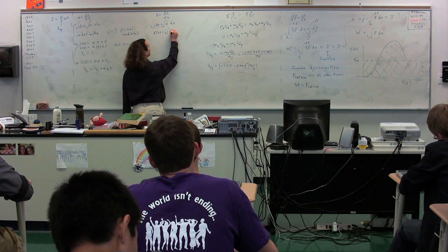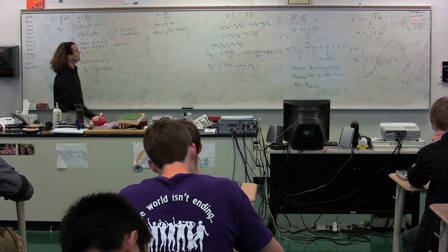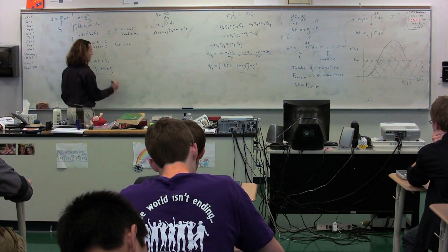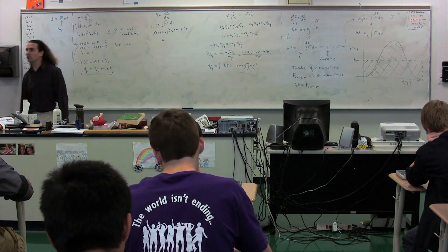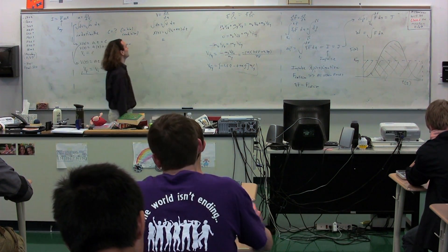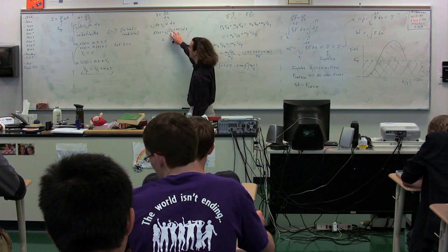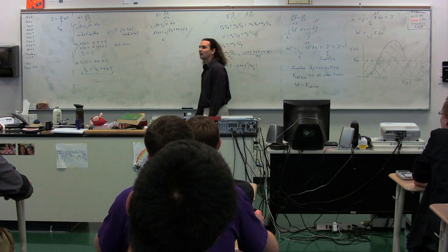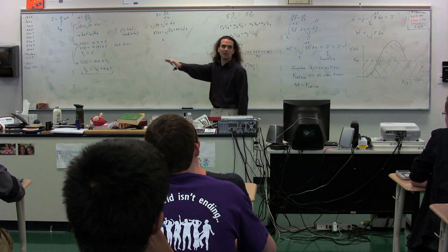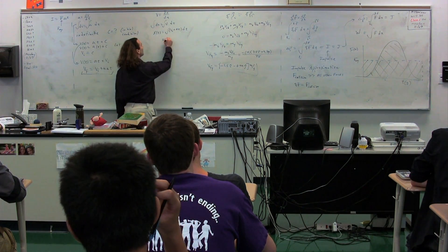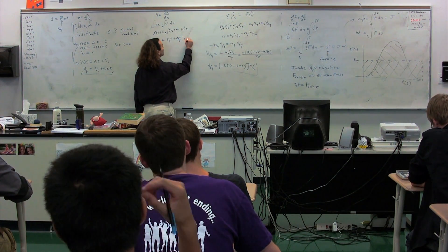The velocity as a function of time is the velocity initial plus the acceleration times time, with respect to time — because this is just the velocity as a function of time, and I've replaced that with this equation. So what is the integral of velocity initial plus acceleration times time with respect to time? It's velocity initial times time plus acceleration times time squared over two, plus c.